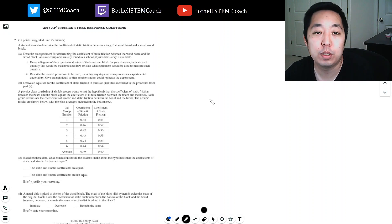Hi, this is Alan with Bothell STEM Coach and today we're continuing the 2017 AP Physics 1 free response questions. We're on number two here, so let's get into it. A student wants to determine the coefficient of static friction between a long flat wood board and a small wood block. Describe an experiment for determining the coefficient of static friction. Draw a diagram of the experimental setup and indicate the quantities to measure.